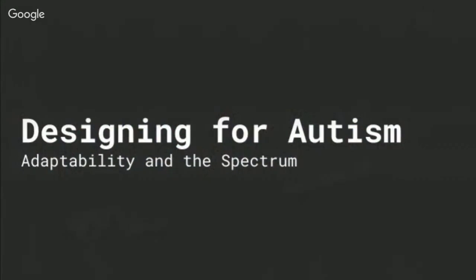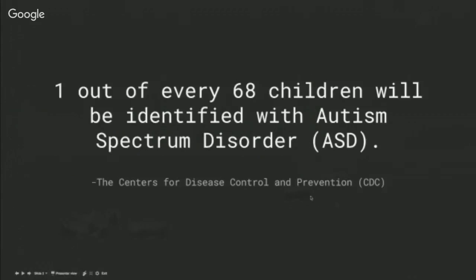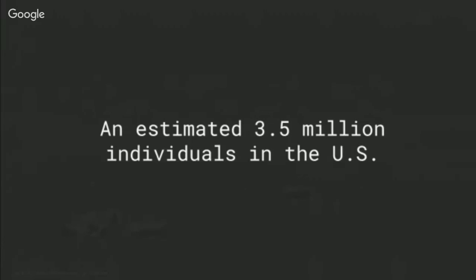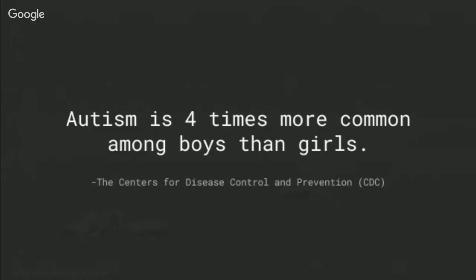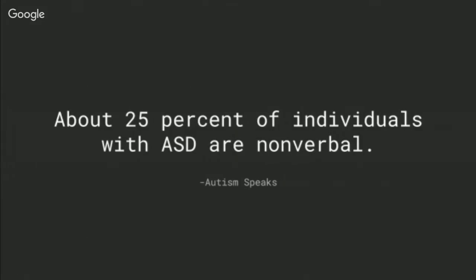We wanted to talk a little bit about how this whole thing got started. I'm sure everybody is familiar with autism to some degree. A quick few statistics: one out of 68 people will be identified with autism spectrum disorder in the US — that's about 3.5 million individuals. It's four times more common among boys than girls, and about 25% of people with autism are nonverbal.